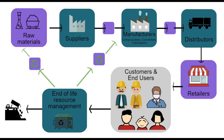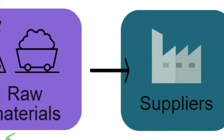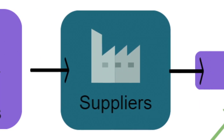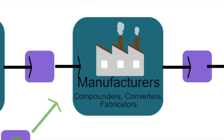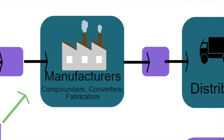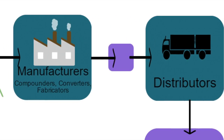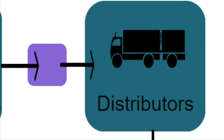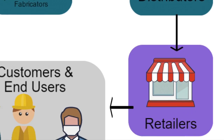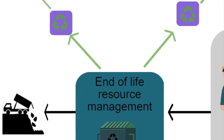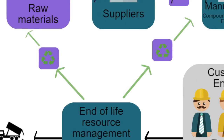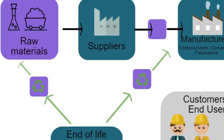A supply chain is a sequence of processes involved in the production and distribution of products. In a typical supply chain there are raw materials brought to market by a supplier. These are then made into different end products by manufacturers, such as compounders, converters and fabricators, then distributed to marketplaces where consumers buy them. At the end of their useful life, products may be disposed of either into landfill or recycled into new products.